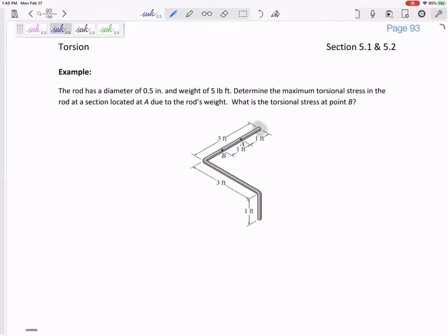All right, the rod has a diameter of 0.5 inches and a weight of five pounds per foot. Determine the maximum torsional stress in the rod at a section A located right there. So find the torsion due to the mass, due to the weight of the rod. And then the stress at B is going to be the same.